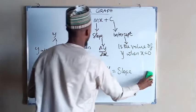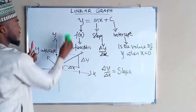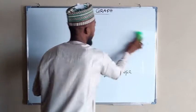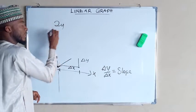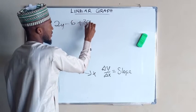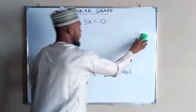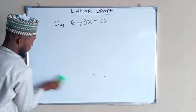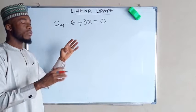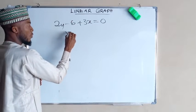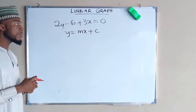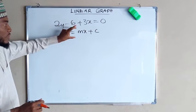So suppose we have, let us solve an equation. Suppose we have 2y minus 6 plus 3x equals to zero, and you are asked to plot a graph of this equation. The first thing to do is to transform it into slope-intercept form, which is y equals to mx plus c. We need to transform this particular equation into this form.